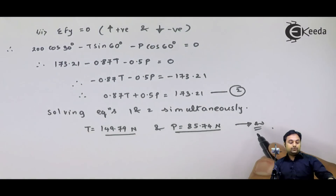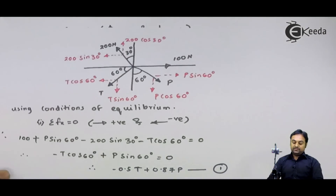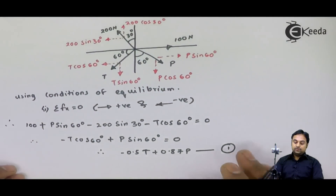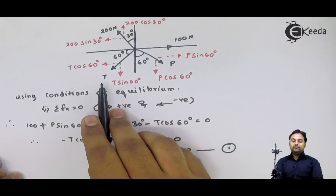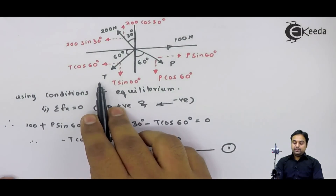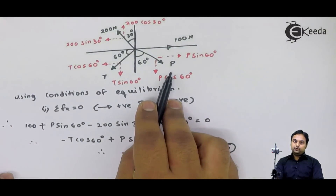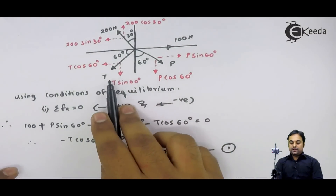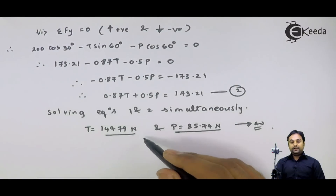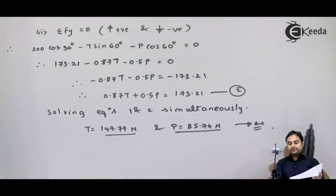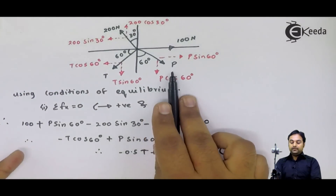Solving equations 1 and 2 simultaneously, we get T = 149.79 Newton and P = 85.74 Newton. So in this question, we were asked to find two unknown forces. Force T = 149.79 Newton and force P = 85.74 Newton.